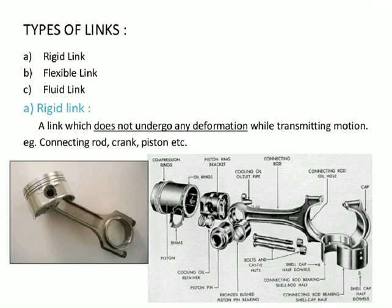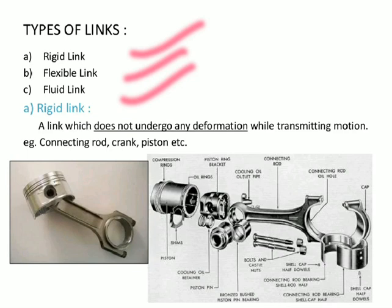There are three types of links: rigid link, flexible link, and fluid link. A rigid link is a link which does not undergo any deformation while transmitting motion. If there is no deformation during motion transmission, we call it a rigid link.